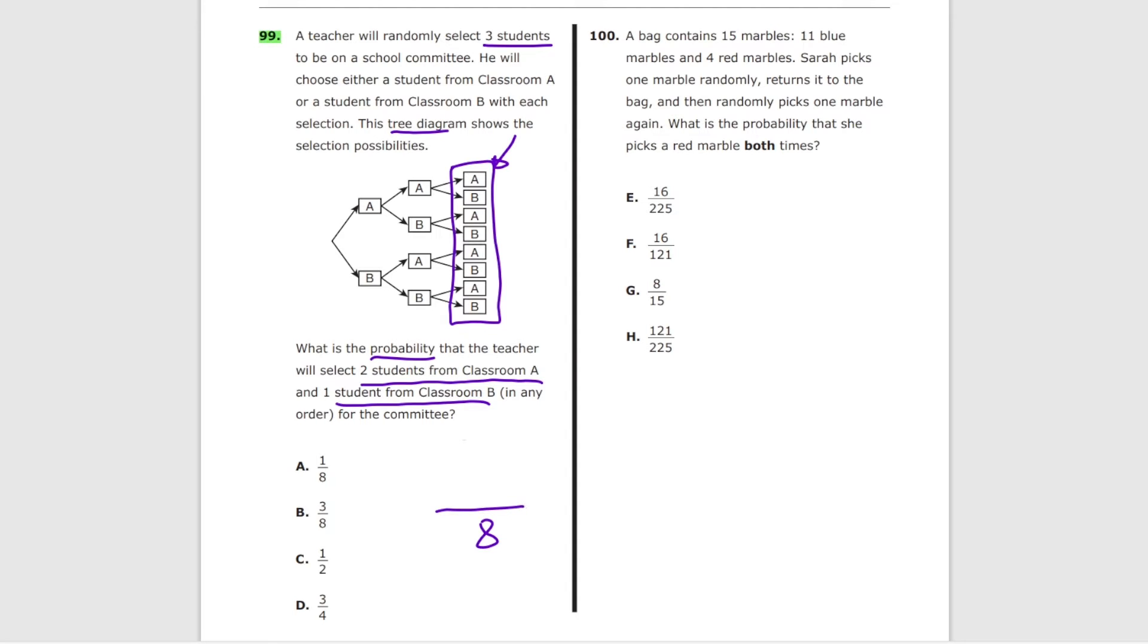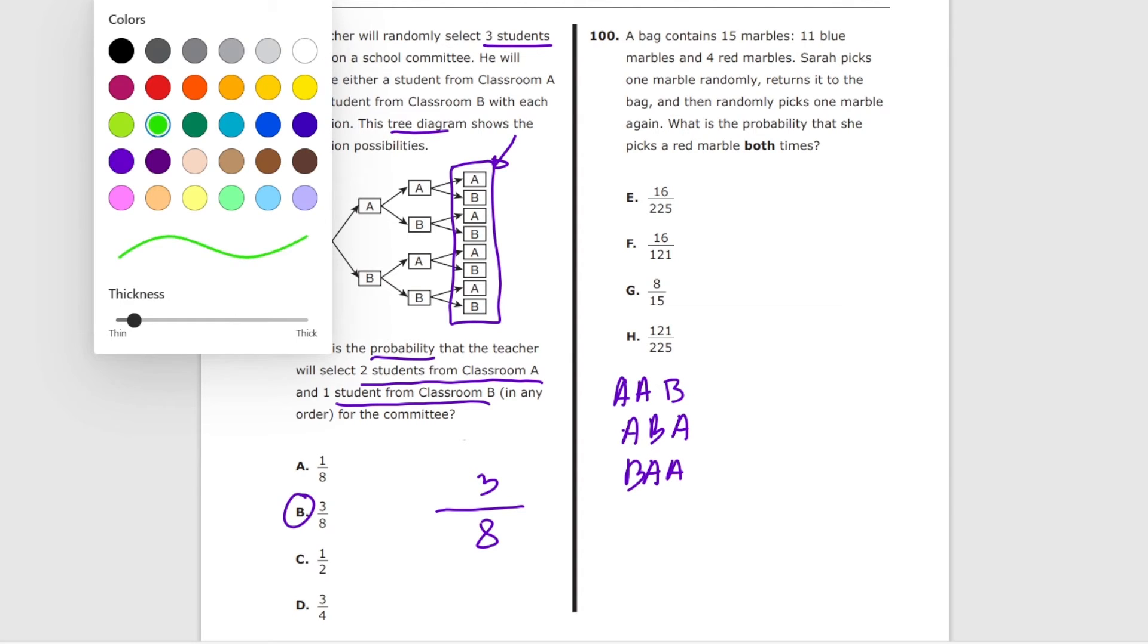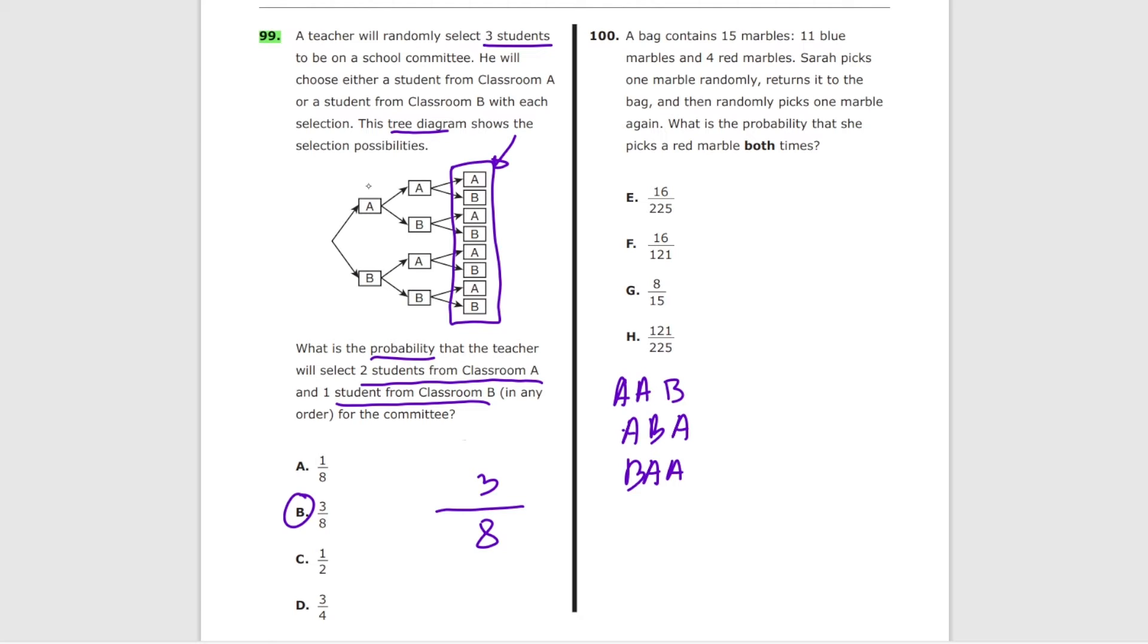How many options are good for you? How many options are you essentially looking for? It's two students from classroom A and one person from classroom B. So it's A, A, B or A, B, A or B, A, A. These are the only three options. So it's three eighths, option B. If you're not sure, what you can do instead is also look at the chart. A, A, B, that's your first one. A, B, A, that's your second one. And B, A, A, that's the third one, which is also three out of eight, B.